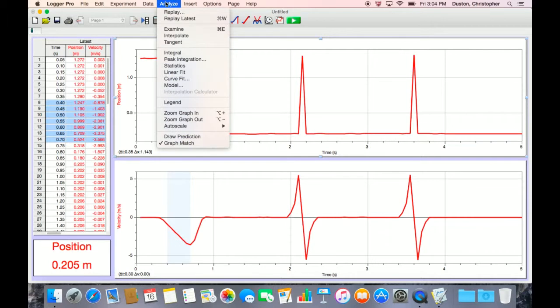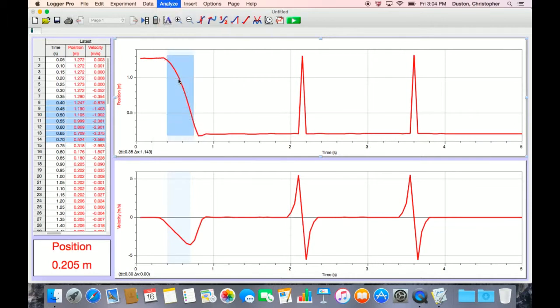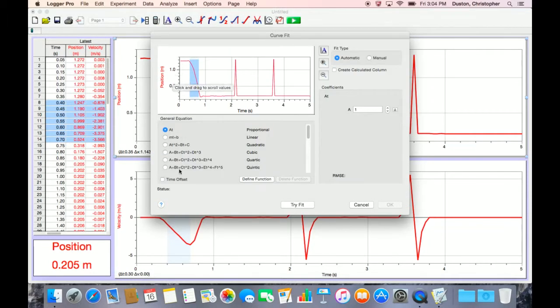Go up to Analyze, go to Curve Fit. Then you have a whole selection of equations. This is the position. We expect the position to be dependent on t² and t, so it looks like this equation right here is the correct one. It says quadratic. You can click Try Fit. It will give you some numbers: A, B, and C. Click OK.